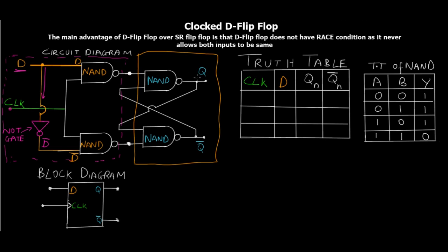The output of the upper NAND gate is fed back as one input to the lower NAND gate, and the output of the lower NAND gate is fed back as one input to the upper NAND gate. Both output NAND gates also receive one input each from their corresponding orange NAND gates. These two orange NAND gates allow us to synchronize the circuit with the clock. When the clock is low, the circuit holds its previous latched state.